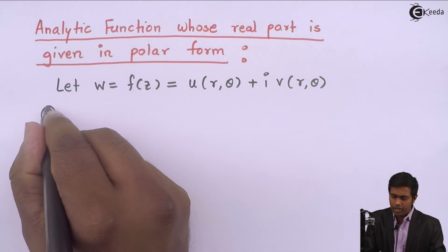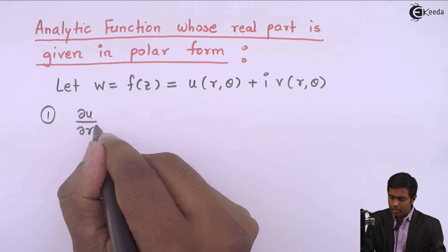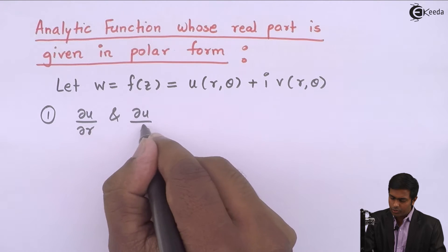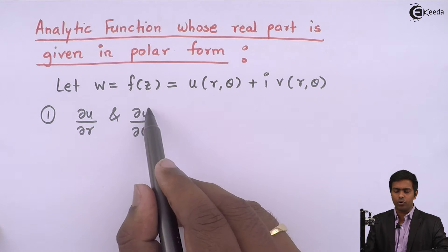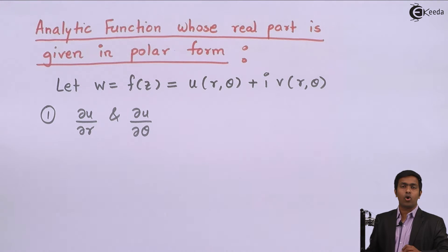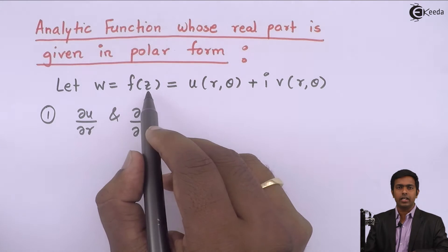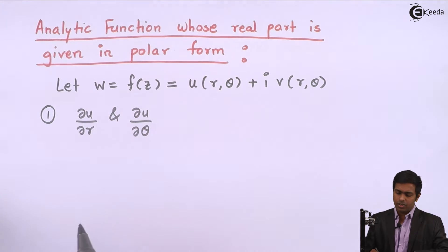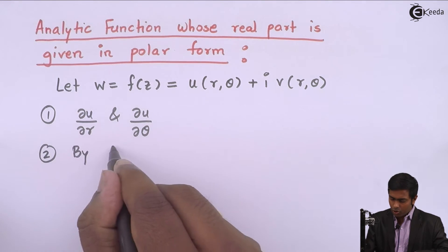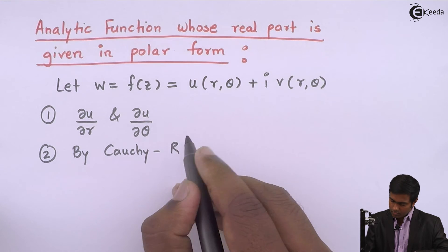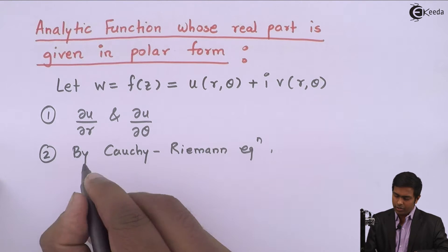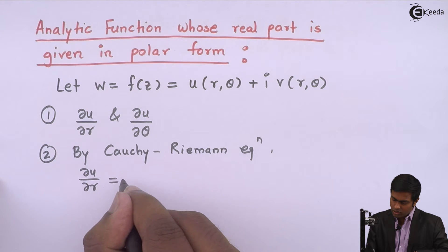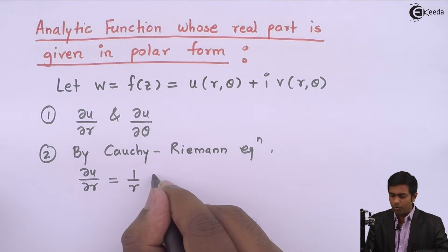In step number 1, we are going to find the value of ∂U/∂R and ∂U/∂θ from the value of U. Next, once we get ∂U/∂R and ∂U/∂θ, we are going to use the Cauchy-Riemann equation in polar form because F(Z) is said to be an analytic function. By the Cauchy-Riemann equation, we will get ∂U/∂R equal to (1/R) ∂V/∂θ.